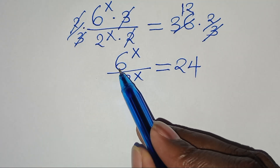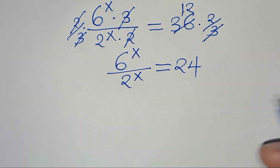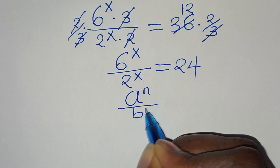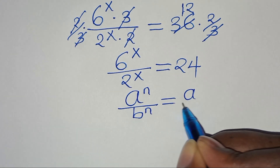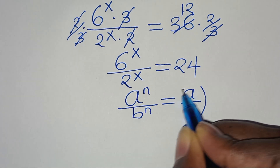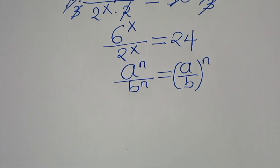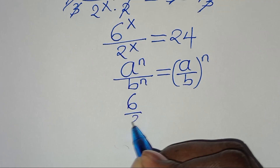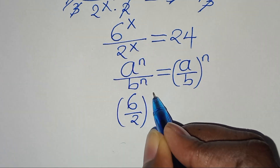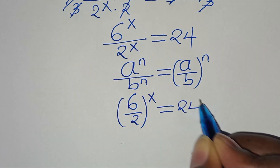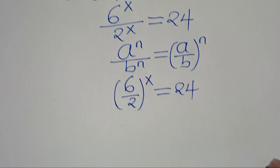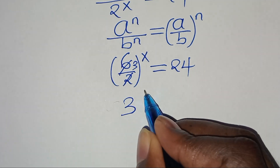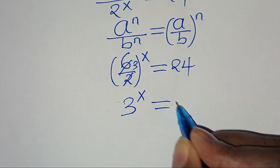Now, 6 to the power of x divided by 2 to the power of x is in the form of a to the power of n divided by b to the power of n, which we can express as (a over b) raised to the power of n. Applying this exponent property, we get 6 over 2 raised to the power of x equals 24. Since 6 divided by 2 is 3, this implies 3 to the power of x equals 24.